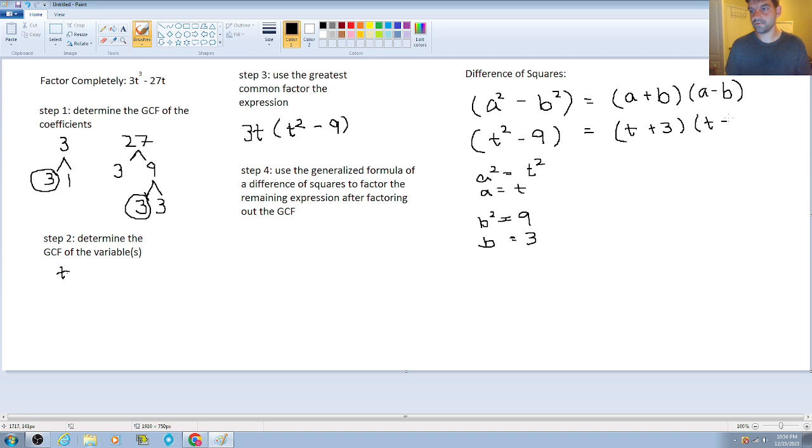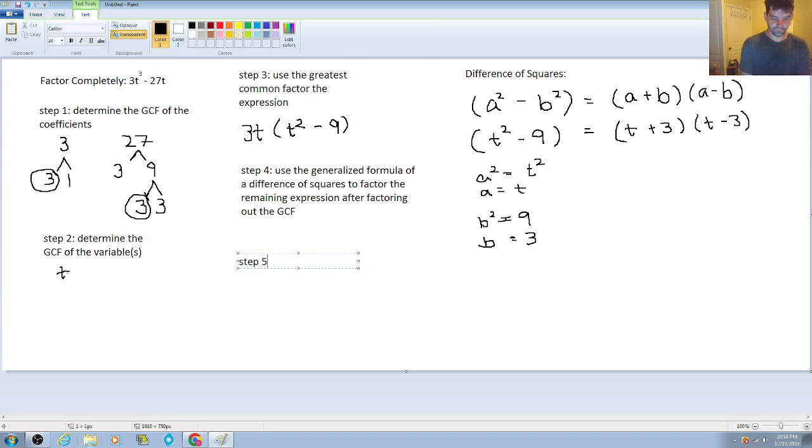So now we have fully factored this expression but what we have to keep in mind is for step number 5 that we're going to put all of the parts back together. So step 5 is to rewrite the factored form putting together both the GCF and difference of squares factoring methods.